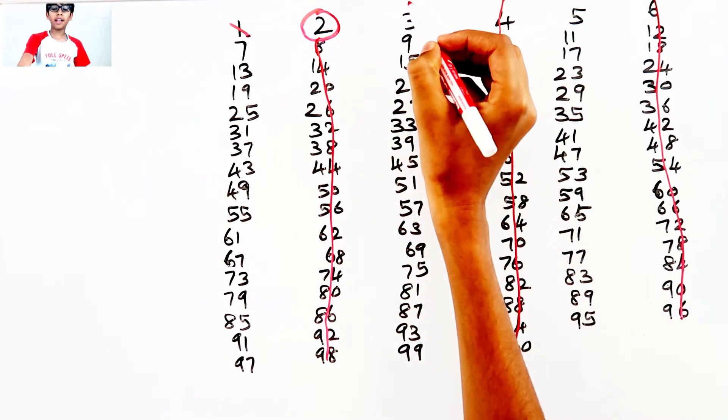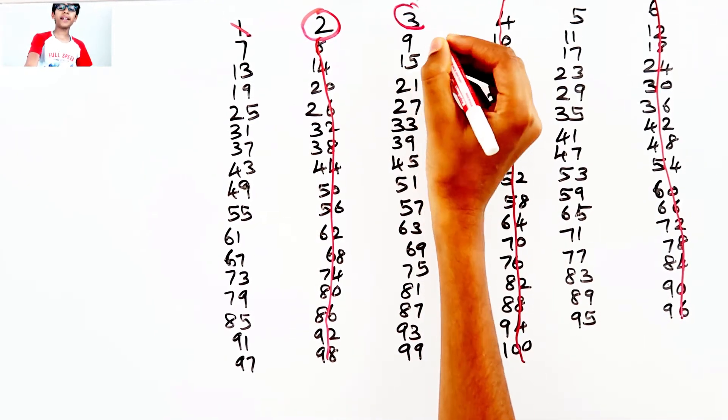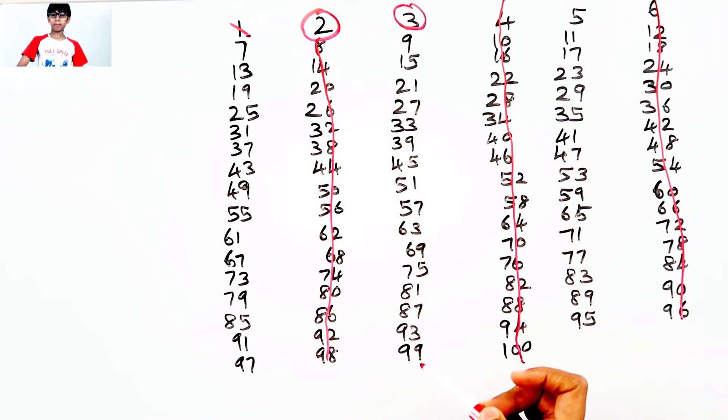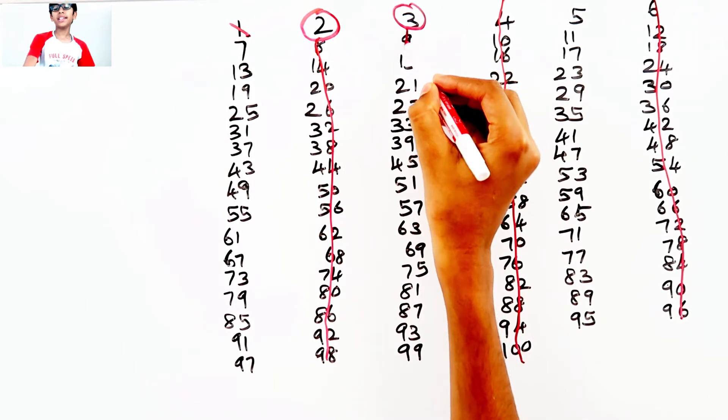The next prime number is 3. All of these numbers can be divided by 3, so let's cross them out.